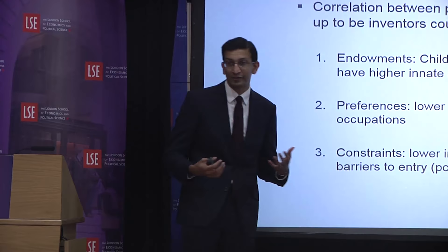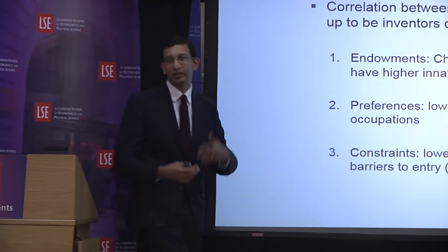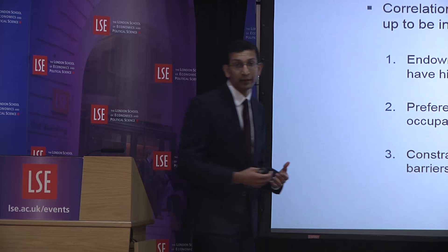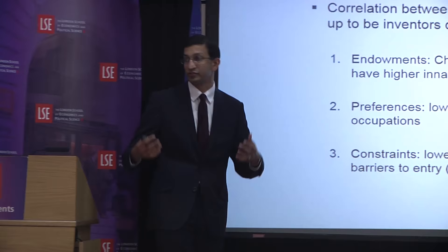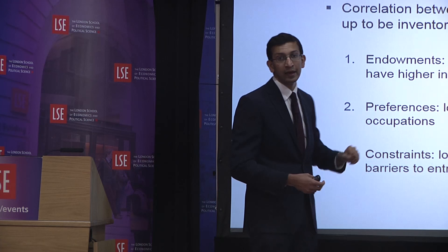A third possibility is constraints. Perhaps lower-income kids face greater barriers to entry into the innovation sector — weaker schools, worse neighborhoods, or liquidity constraints. These three explanations have very different policy implications. If it's about endowments, there's not much we can do. If it's about preferences, we might want to respect those or try to change them. If it's about constraints, we'd want to improve equality of opportunity along the lines we've been discussing.